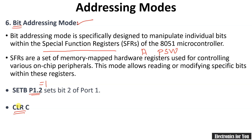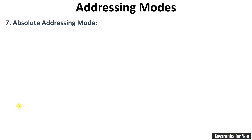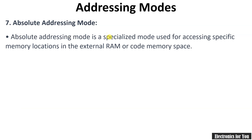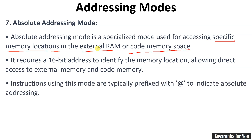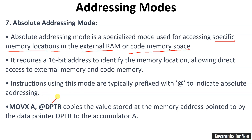The last addressing mode is absolute addressing mode. This is used for accessing specific memory locations in external RAM or external program memory. Generally a 16-bit address is stored somewhere — for example in DPTR — and the @ symbol is used. So the content of DPTR will be used to access the external RAM address, and the data from that location will be copied into accumulator. This is how absolute addressing mode works.